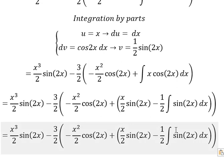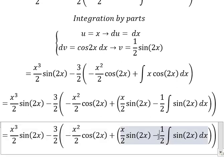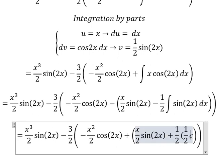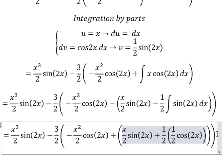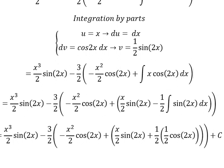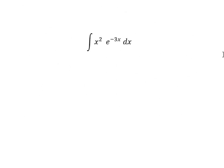Combining the signs, negative with sine 2x gives positive 1 over 2 cosine 2x, and we bring in the sine term. Next we use integration by parts again.